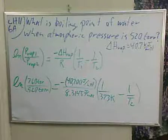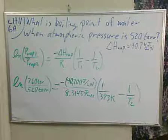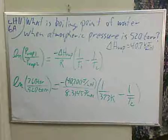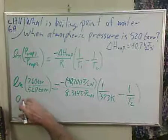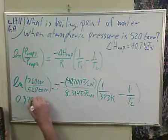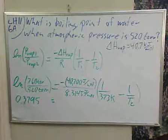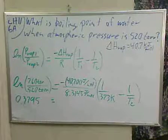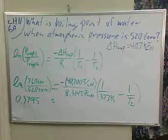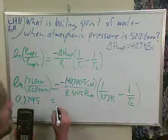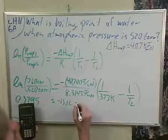So we just start reducing these numbers down. So we do the natural log, 760 divided by 520. So this whole term here is 0.3795. And I'll multiply this through. So we got 40,700 divided by 8.3145 divided by 373. So a negative 13.12 minus and a minus, that'll give us a positive.